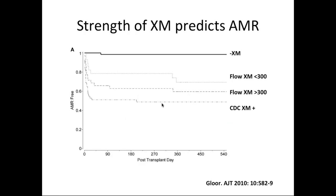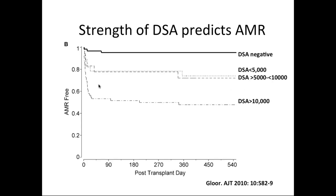Looking at outcomes and rejection risk: if you have a positive CDC crossmatch, there is roughly 50% risk of rejection within the first month. A negative crossmatch carries almost no antibody rejection risk. A positive flow crossmatch carries 20 to 30% antibody rejection risk, predominantly in the first 60 days depending on crossmatch strength. For DSA titers: above 10,000 MFI carries about 50% rejection risk; negative antibodies carry almost no risk; lower-titer DSAs carry around 20% risk.